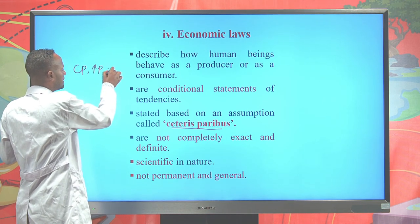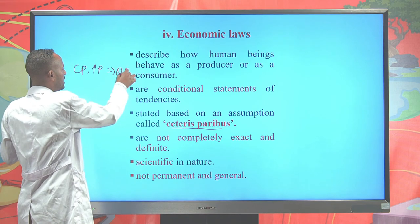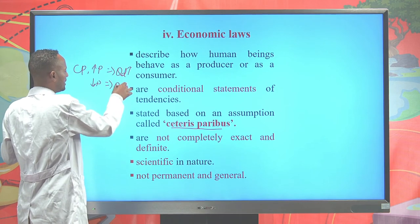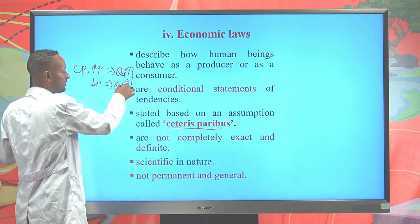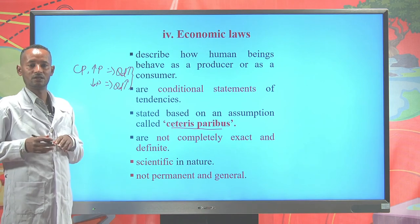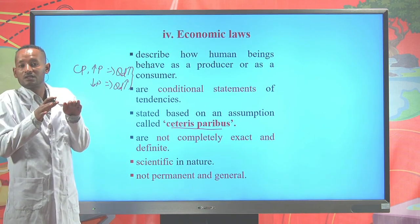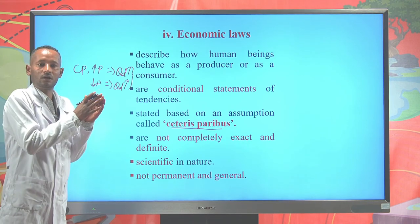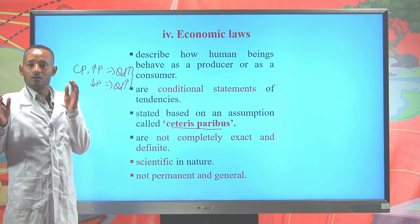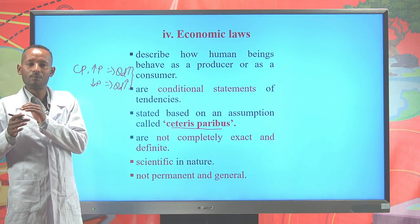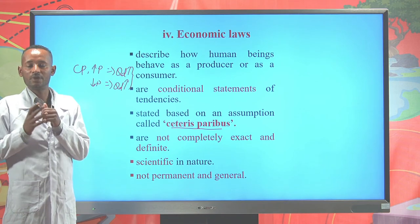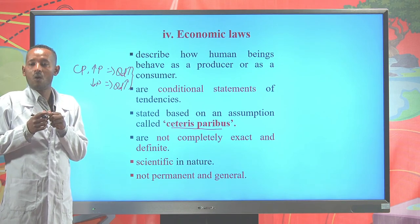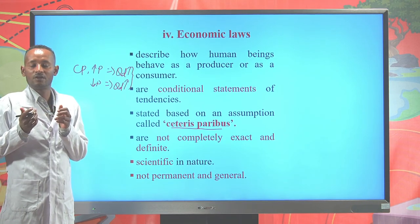The law of demand states that, ceteris paribus, with an increase in price of a commodity, quantity demanded will decline, and with a fall in price, quantity demanded will increase — an inverse relationship between price and quantity demanded. This holds true only if all other things remain constant. For example, if you have 10 birr and the price of a single egg is 2 birr, spending all your income on eggs gives you 5 eggs.